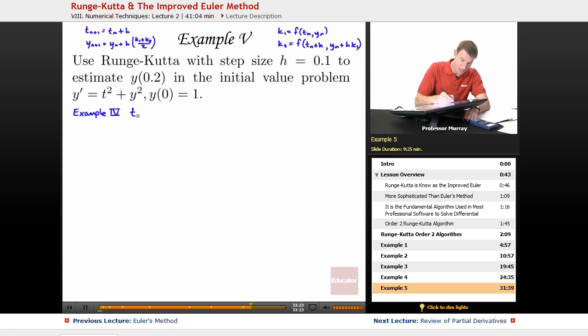What we had there is t1, we already figured it out back in Example 4. Our t1 was 0.1, and our y1, figured out last time, was 1.111. So, we're going to use those to take this one more step.